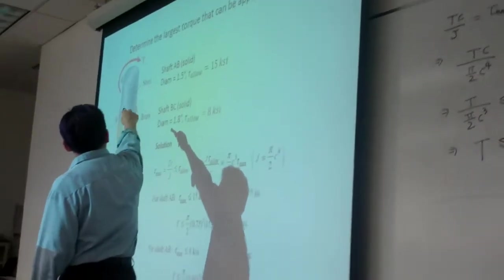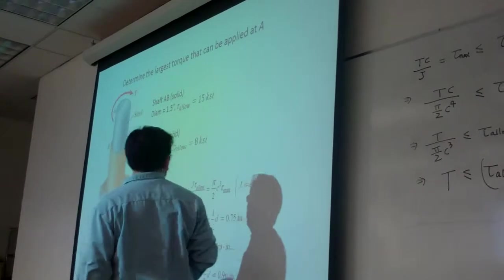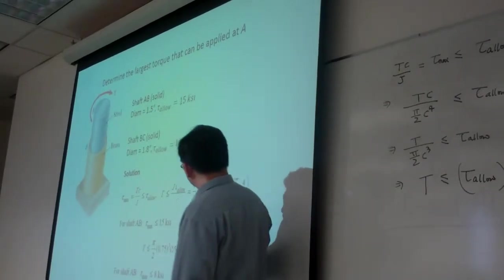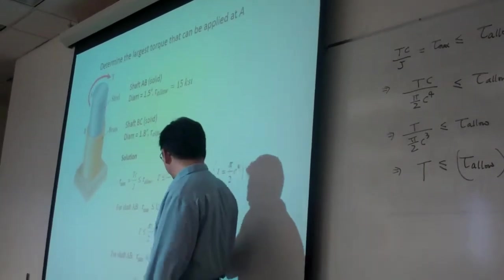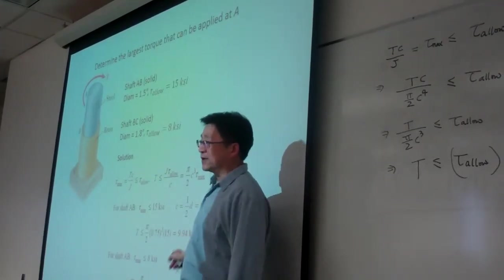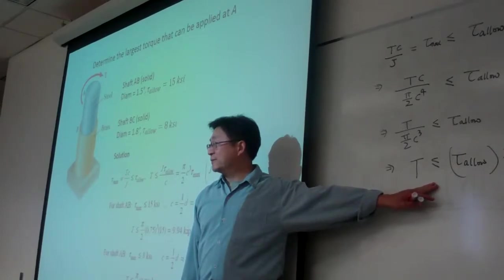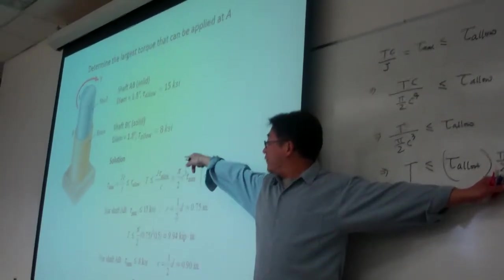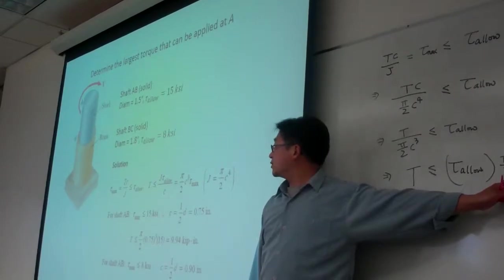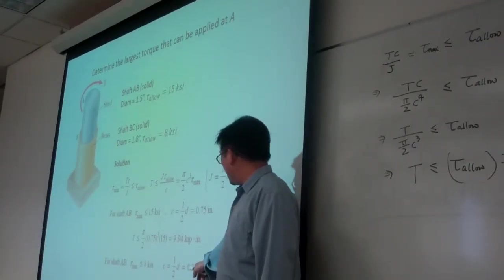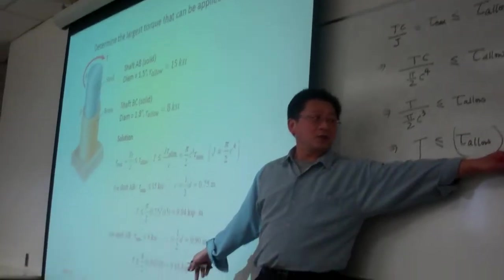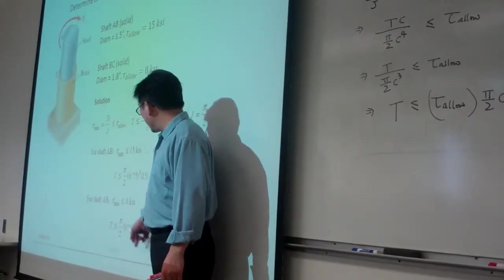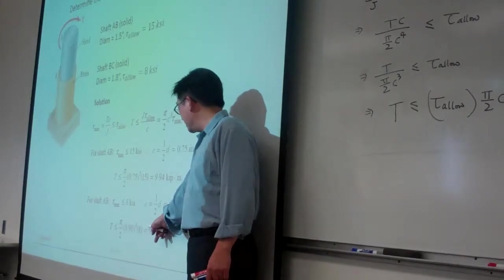For shaft AB, the radius is 0.75 inches. We plug in C equal to 0.75 for shaft AB, and we get T is less than or equal to 9.94. For shaft BC, the radius is 0.9 inches. We plug in 0.9 and the allowable stress of 8 KSI, and we find T is less than or equal to 9.16.